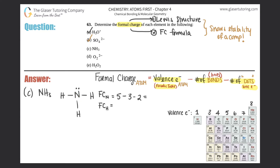Nitrogen formal charge: 5 − 3 − 2 = 0. Neutral. For hydrogen: valence electrons = 1, minus one bond, minus zero dots = 0. Formal charge for each hydrogen is zero. All formal charges in NH₃ are zero, which is why there's no charge in the upper right corner. Everything is stable. Part C was easy.